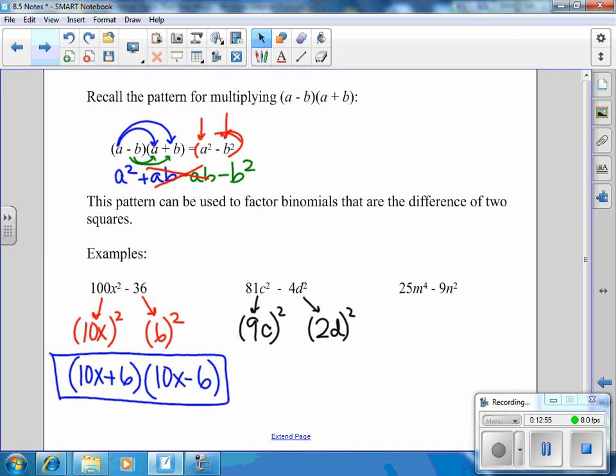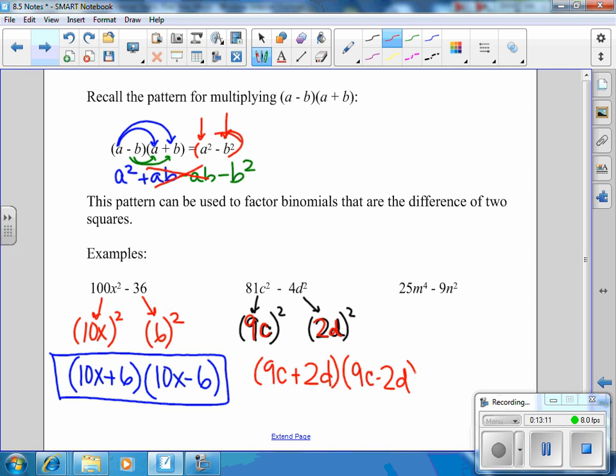And then for 4d squared, I have to have a 2 and a d. So what I just found there are my a and my b, my two terms that I'm going to use to make my binomials. And remember, we have to have one positive, so 9c plus 2d, and then one negative, so 9c minus 2d, in order for those middle terms to cross off. If you want to try the third one, go ahead and pause the video, and I'll put the answer up, and then we are done with our notes.